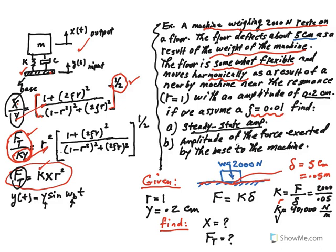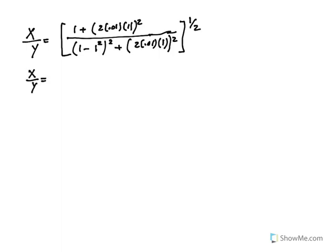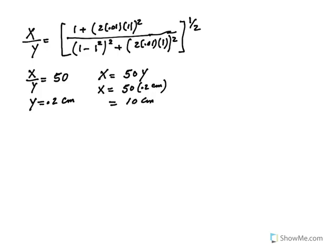Let's use these two equations. So x over y equals the square root of [1 plus (2 times 0.01 times 1) squared] divided by [(1 minus 1 squared)² plus (2 times 0.01 times 1)²]. Doing the calculation, x over y comes out to be 50 — a lot of magnification. So x equals 50 times y equals 50 times 0.2 centimeters, which equals 10 centimeters.